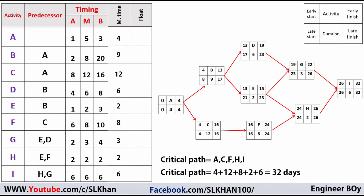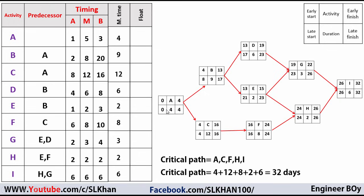Next, I'm gonna calculate the float for each activity. Float equals late start minus early start. For activity A: late start is 0, early start is 0, so float is 0. For activity B: 8 minus 4 equals 4. For activity C: 4 minus 4 equals 0. Similarly for activity I: 26 minus 26 equals 0. Now we have the floats for all activities.